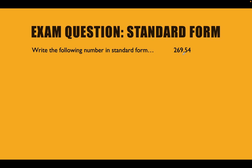When doing standard form, the first thing we want to do is turn this number into a number between 1 and 10. We do that by moving the decimal point either to the left or to the right. If we move the decimal point to the left, then we're going to have a positive power of 10. If we move the decimal point to the right, we're going to have a negative power of 10. Once we've got our number, we write it as times 10 to the power of however many times we moved it.